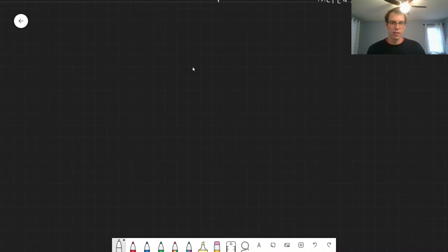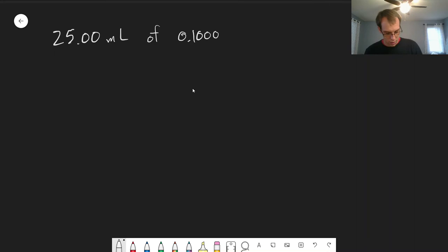So the easiest way to look at this is with some specific numbers. So let's imagine we have a titration. We start with 25 milliliters of a 0.1 molar solution of chloride.